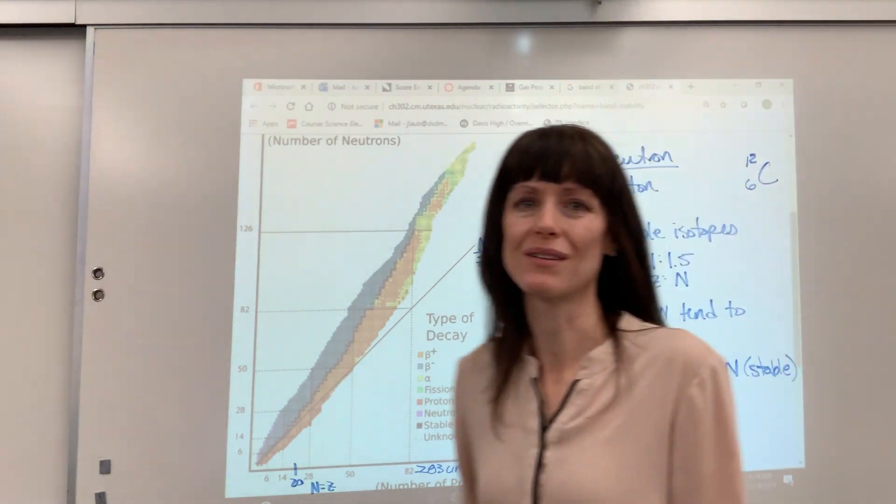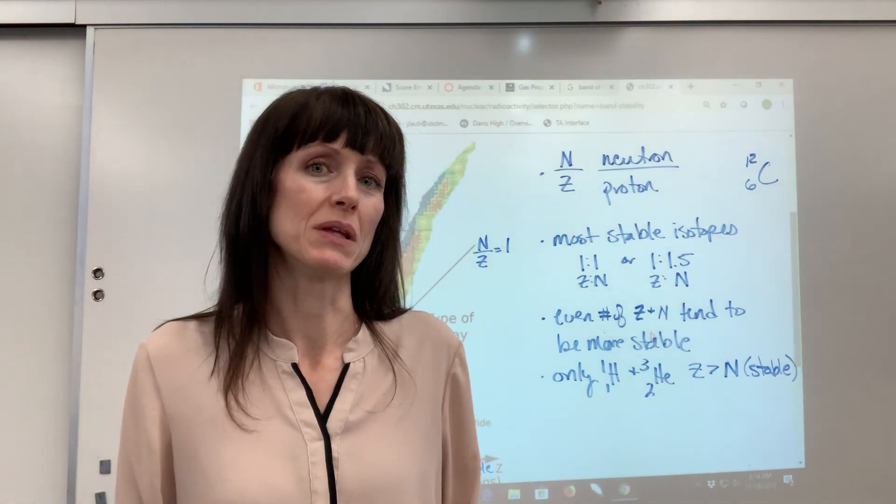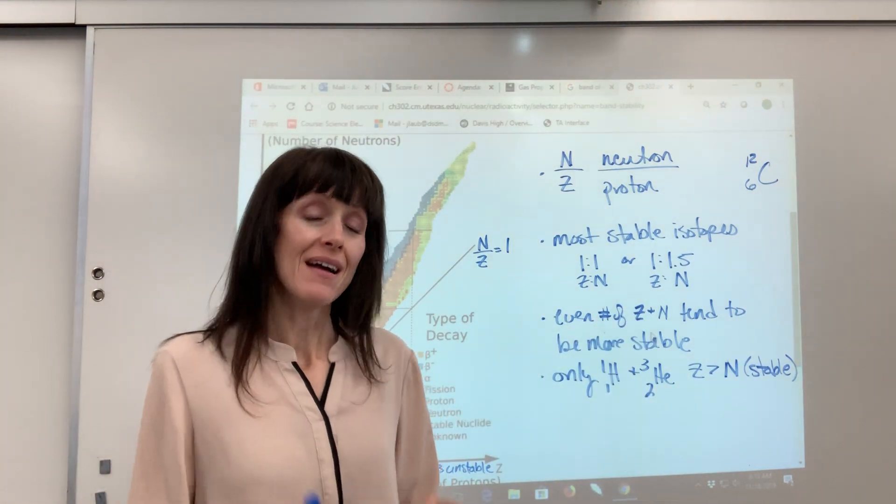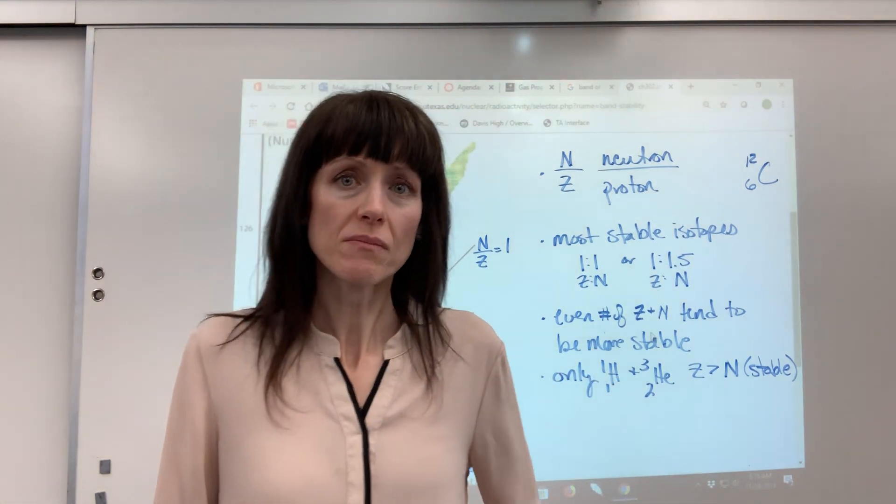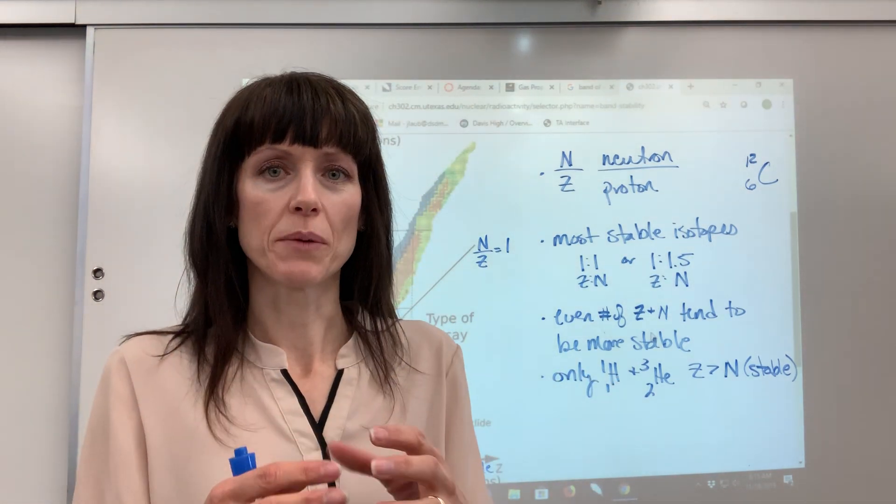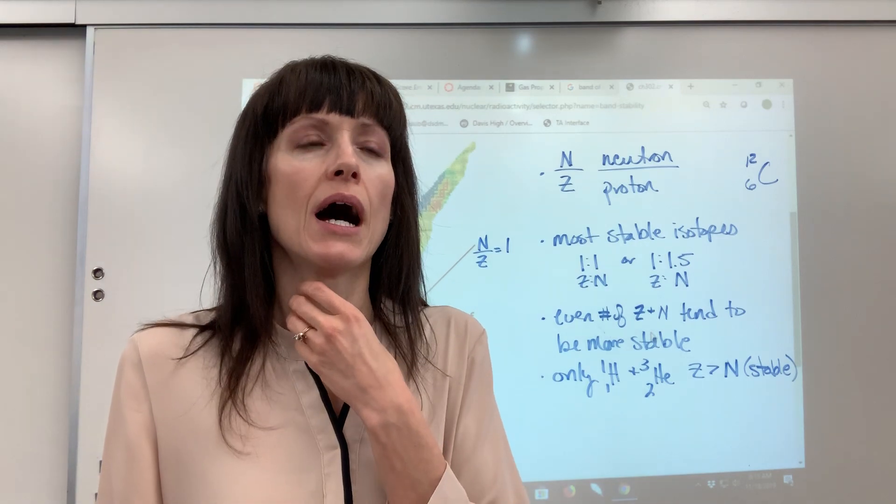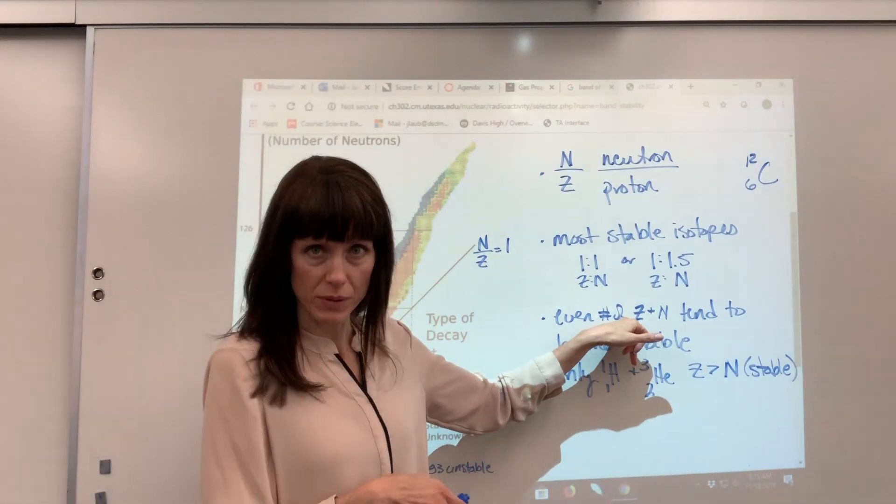Just kind of a little interesting fact. You might be given a series of isotopes and have to predict which one would be the most stable. So an even number of protons and an even number of neutrons tend to be the most stable. So if you get an isotope that's both even number of protons, even number of neutrons, that's the one that you would predict would be the most stable.